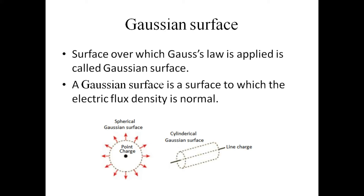For example, for a point charge distribution, the Gaussian surface will be a sphere. Whereas for a line charge distribution, the Gaussian surface will be a cylinder. Another point to be noted is that the electric flux will always be normal to the Gaussian surface. We can note that the line of force is perpendicular to the Gaussian surface.